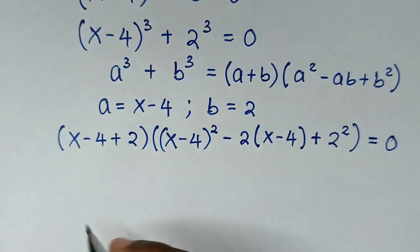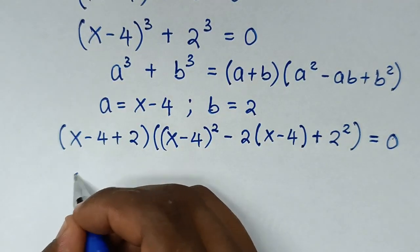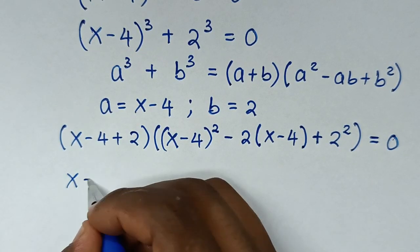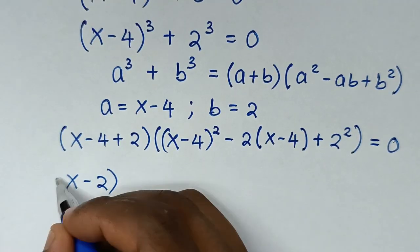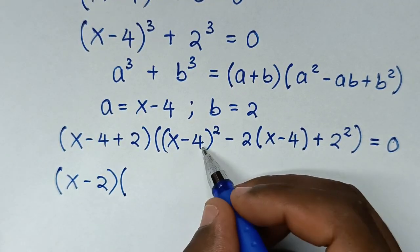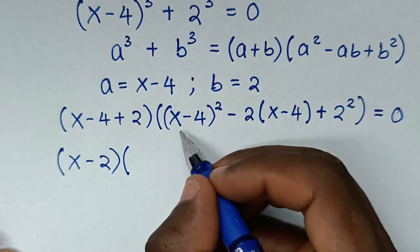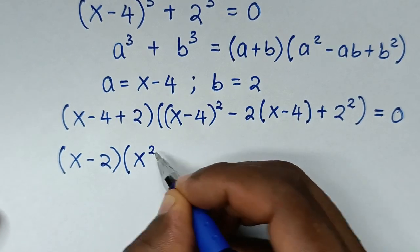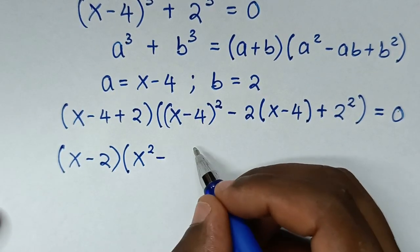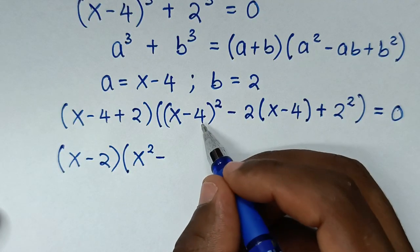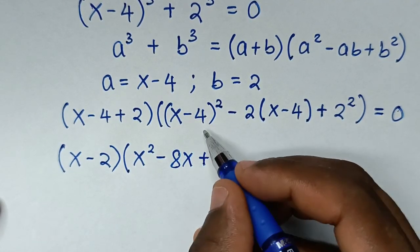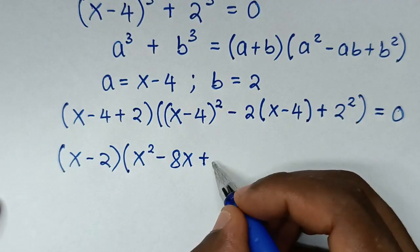In the next step, x - 4 + 2 simplifies to x - 2. Expanding (x - 4)²: x times x = x², minus 2 times 4 times x = -8x, plus 4 times 4 = 16.